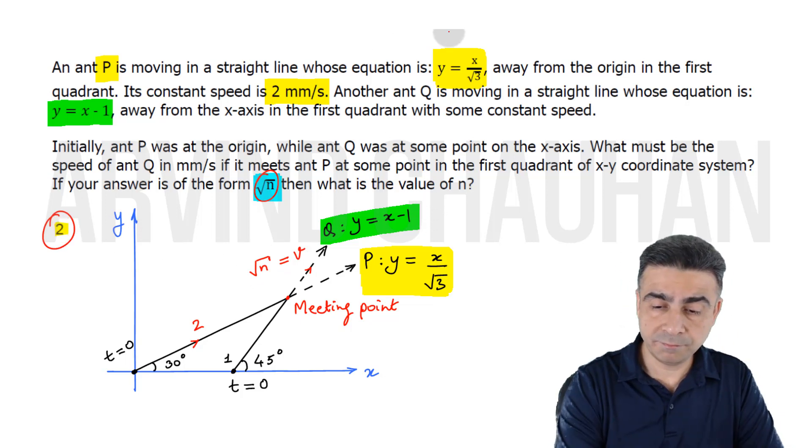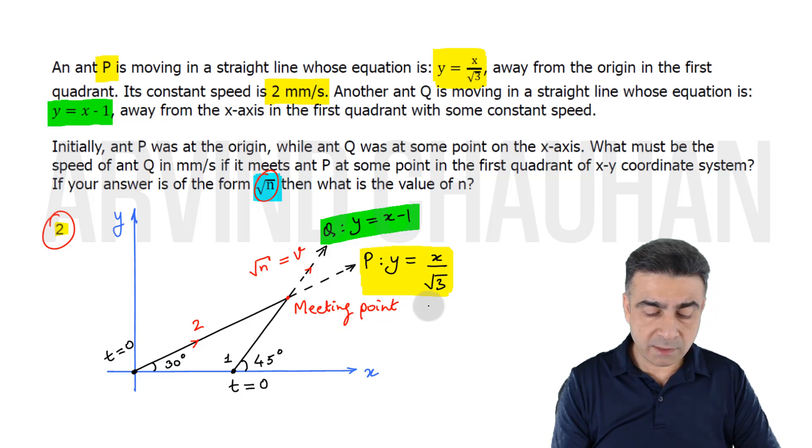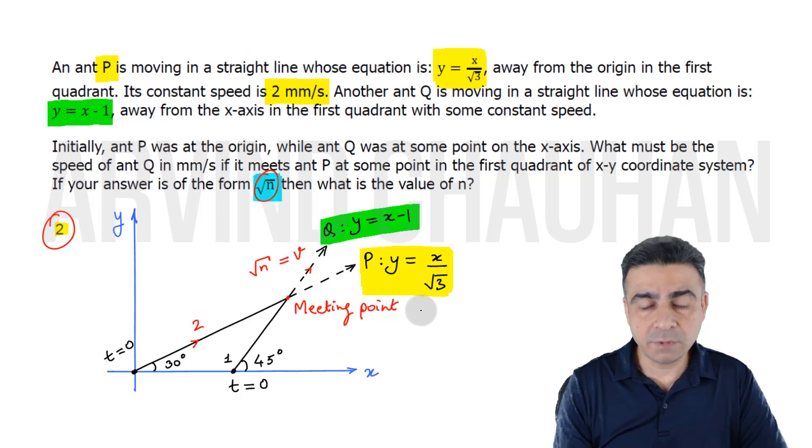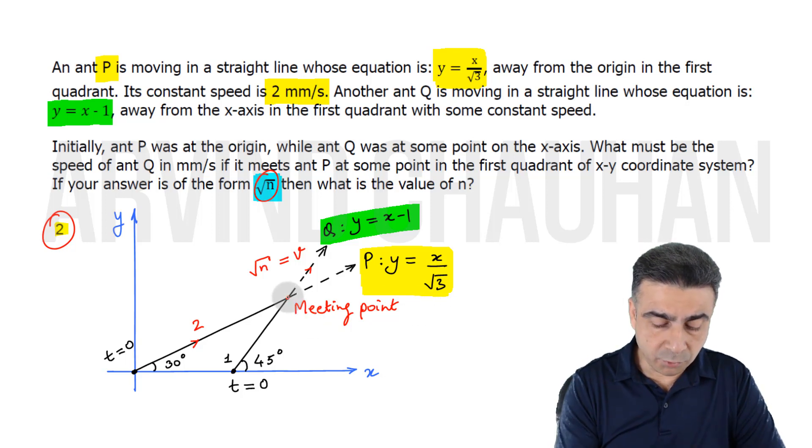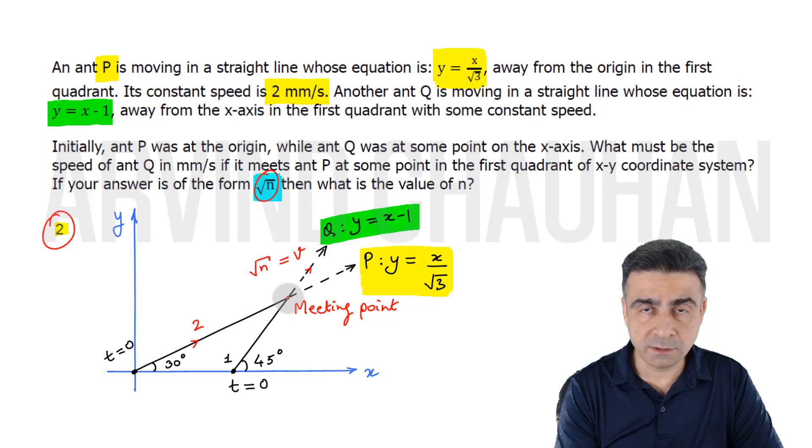Let's solve this problem. As you can see, the diagram is quite self-explanatory. They both meet at this point. Whatever distance ant P has to travel in a certain time, ant Q must travel this distance in the same time. You can do this by several methods - use the actual distances and speeds, or an easier solution would be to use the y-coordinates.